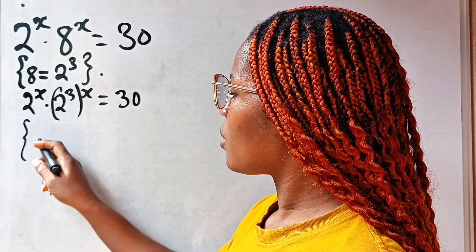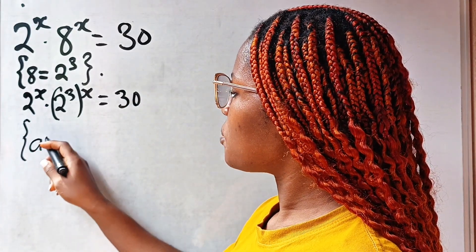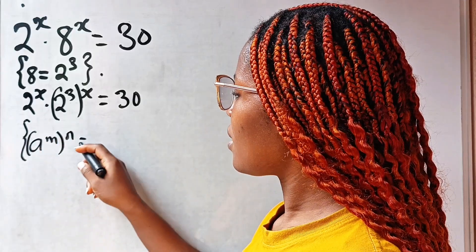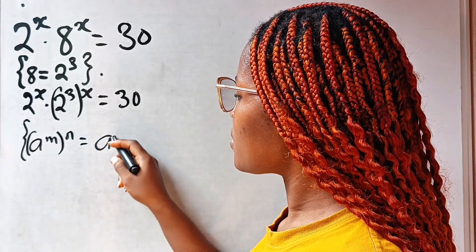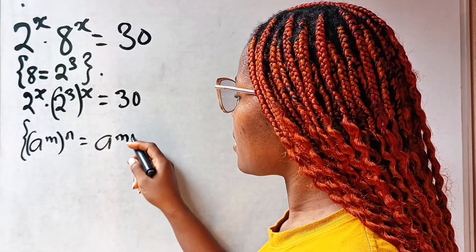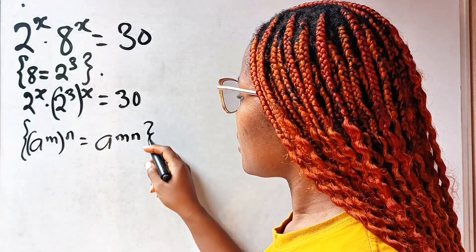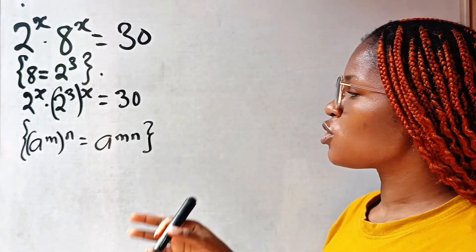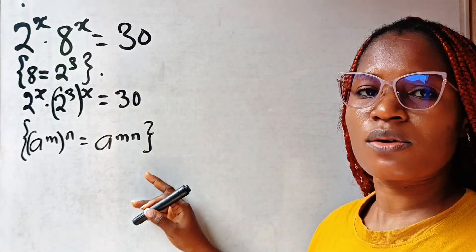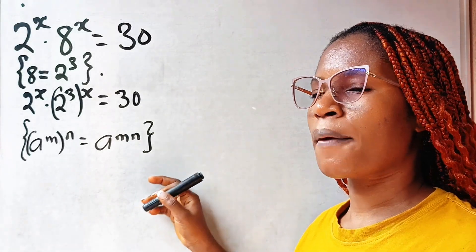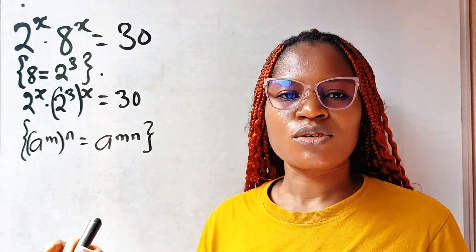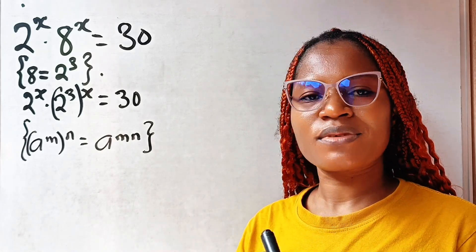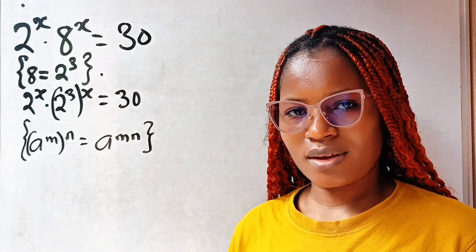Recall that 8 to the power of m, raised to the power of n, is equal to 8 to the power of m times n. Now I want you to note that we are going to prove that the answer we got is correct, which is the most interesting aspect of this video — so don't miss it.